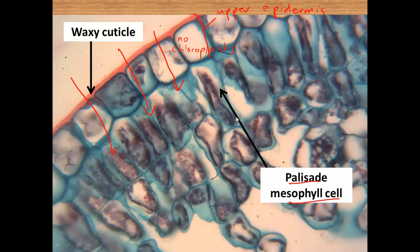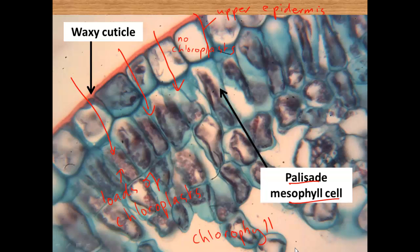The layer underneath the upper epidermis is the palisade mesophyll layer, made out of palisade mesophyll cells. These are characterised by the fact that they have many chloroplasts. Having many chloroplasts means having a lot of chlorophyll contained in those chloroplasts, and because you have a lot of chlorophyll, you have a lot of it to absorb light energy — which speeds up photosynthesis.